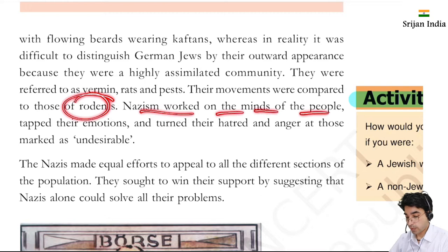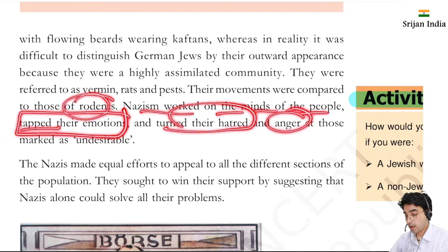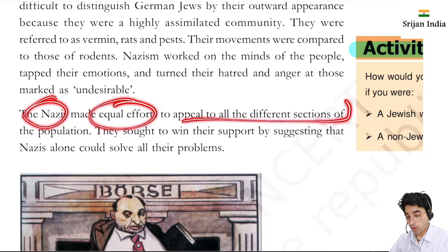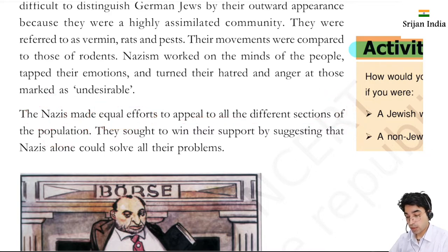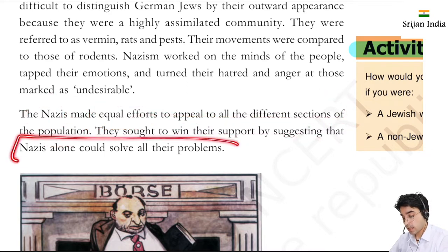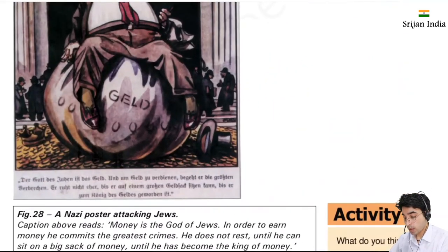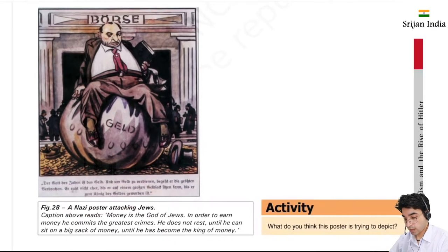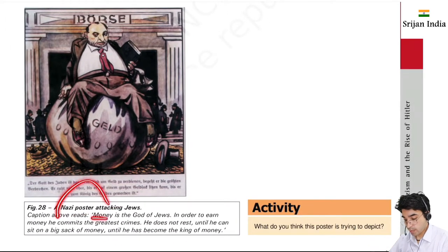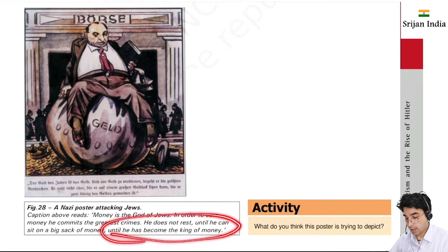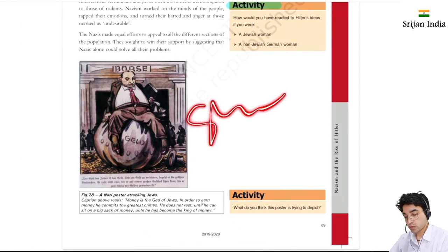Nazism worked on the minds of the people - their emotions were played with, and hatred and anger were turned toward undesirables. Nazis put equal effort into appealing to all different sections of the population. They sought to win support by suggesting that Nazis alone could solve all their problems. It was a mind game. One Nazi poster attacking Jews had the caption: 'Money is the god of the Jew. In order to earn money he commits the greatest crime. He does not rest until he can sit on a big sack of money, until he has become the king of money.' So in this way stereotyping was done.